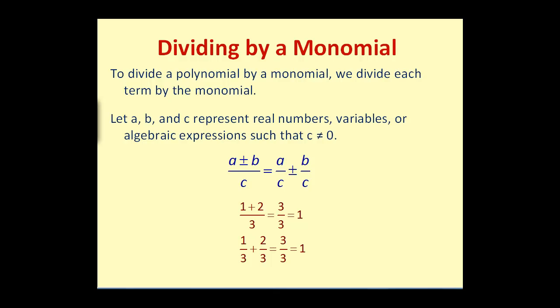To divide a polynomial by a monomial, we divide each term by the monomial. If we let a, b, and c represent real numbers, variables, or algebraic expressions, such that c doesn't equal zero, the quantity of a plus or minus b divided by c is equal to a divided by c plus or minus b divided by c.